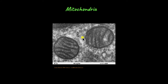Way back in 1857, when physiologist Albert von Koliker was studying insect muscle cells under a microscope, he discovered cylindrical shaped organelles in the cell. Little did he know that he had discovered mitochondria. 12 years later, the scientist Carl Benda named the organelle mitochondria, and the rest is history.